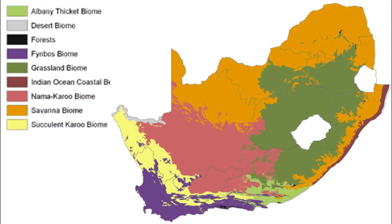Look carefully at the different habitats found in South Africa. How many habitats can you see? Name these habitats. Can you identify the type of habitat in the area where you stay? You can pause the video and answer these questions.